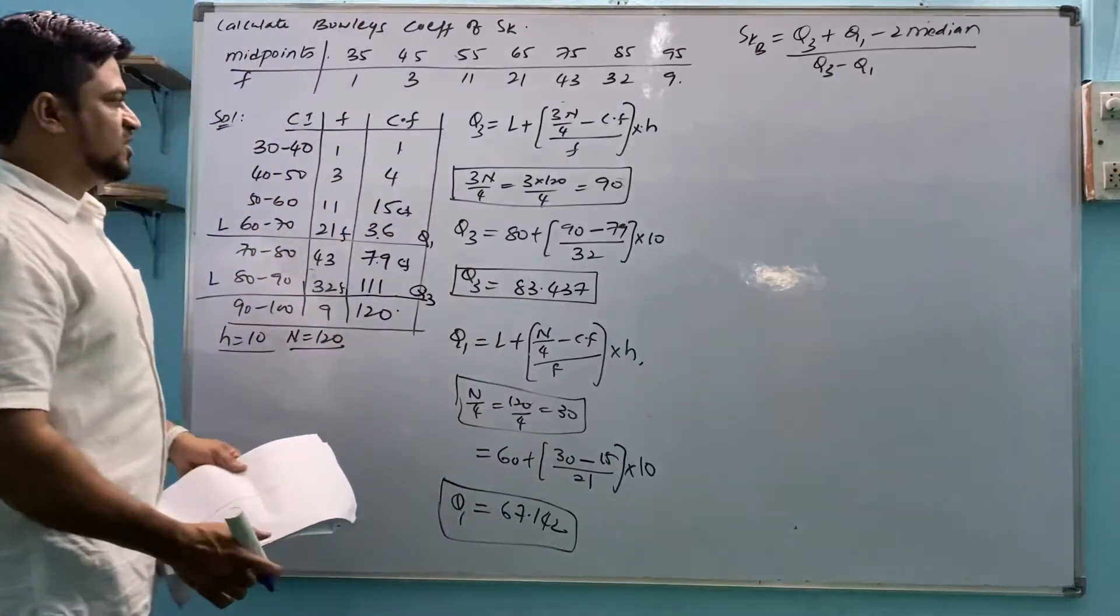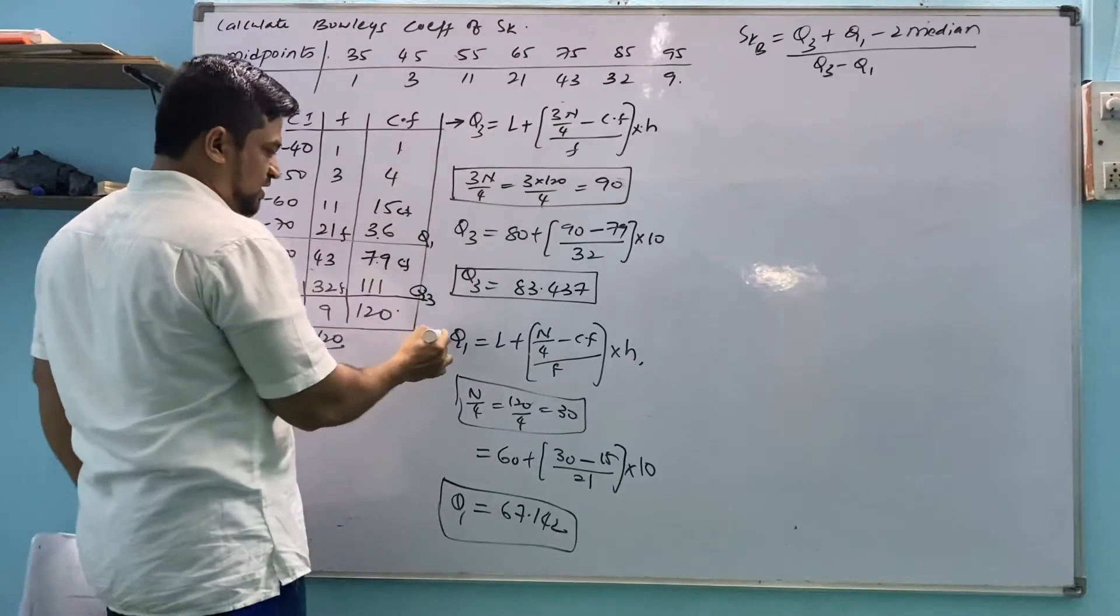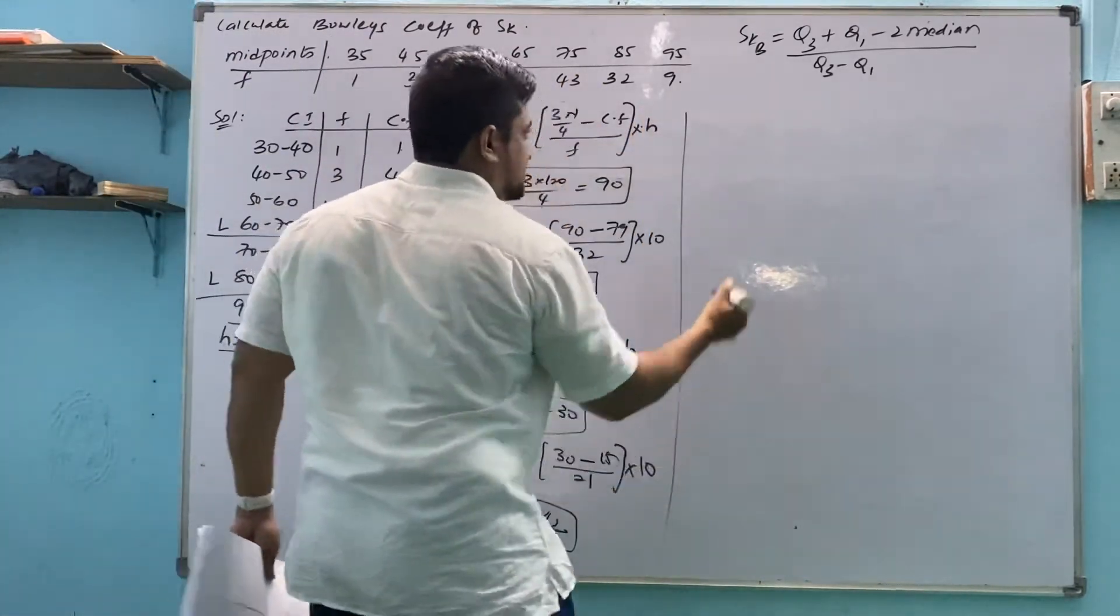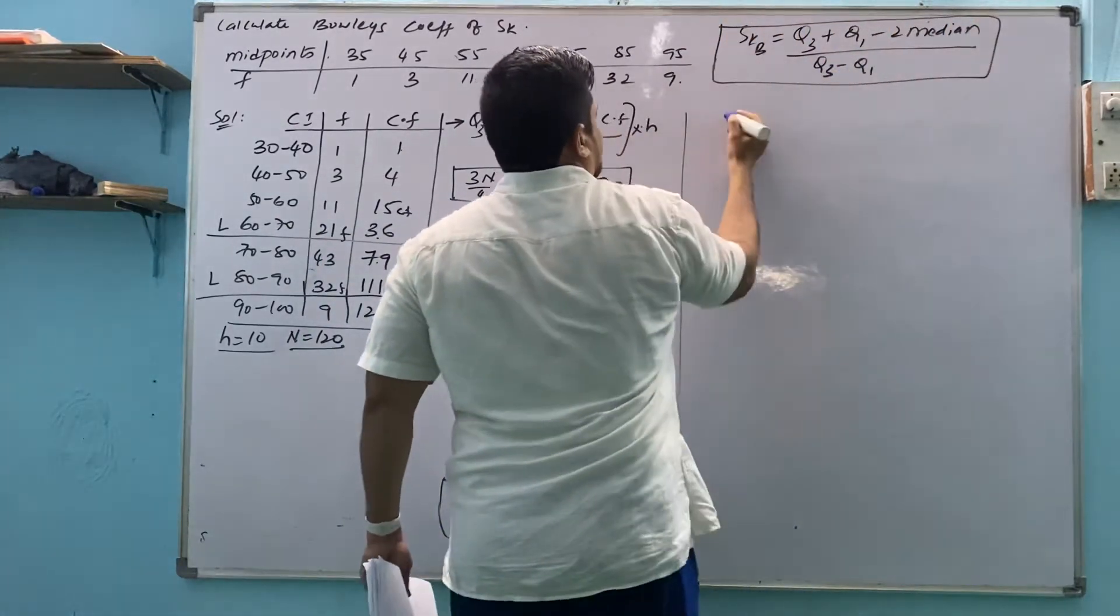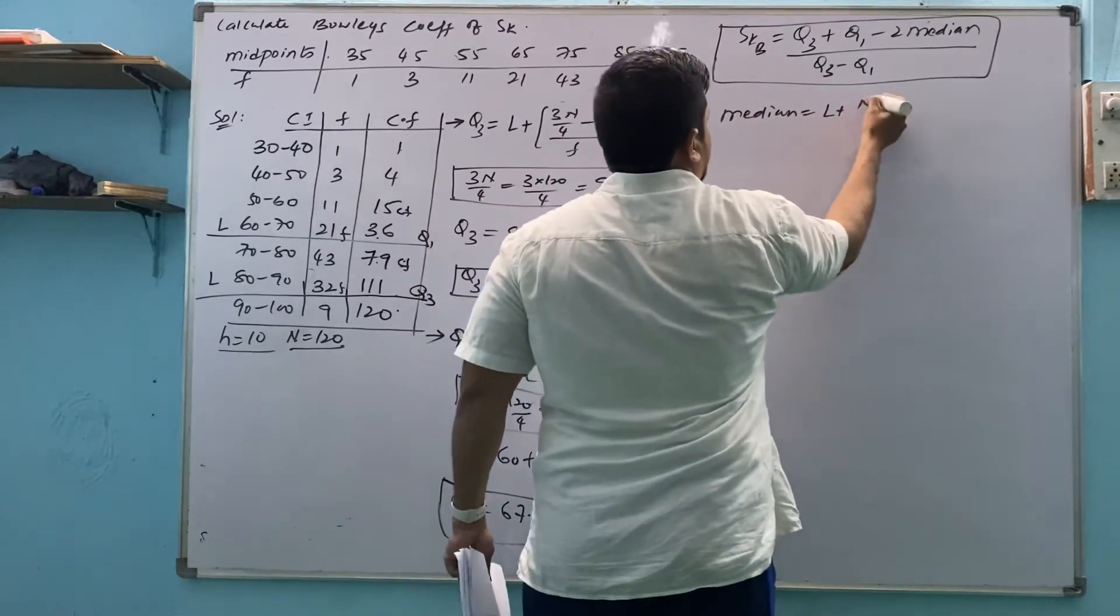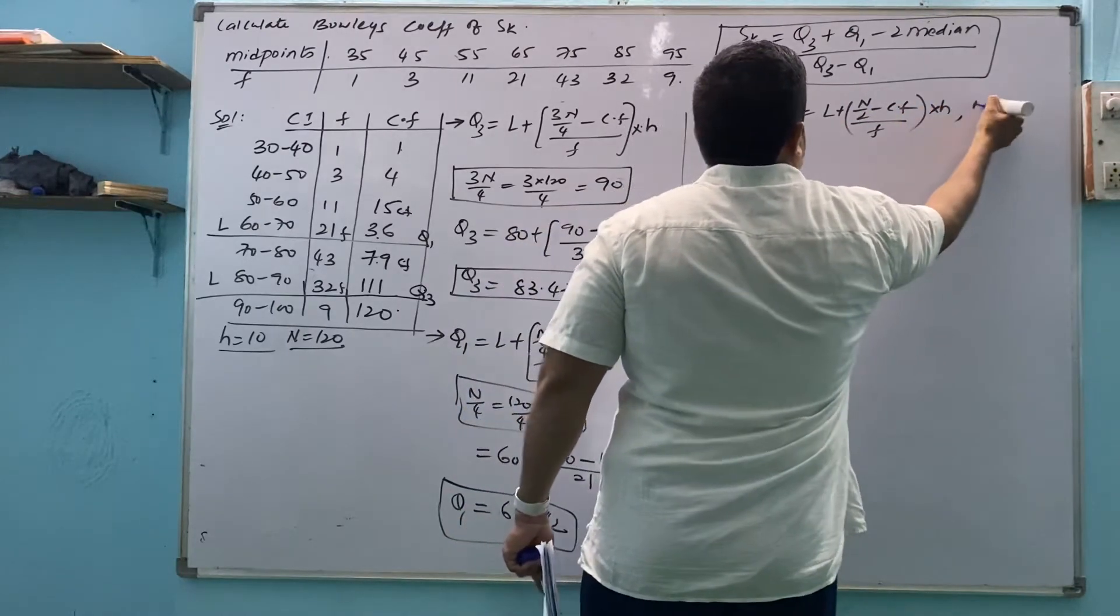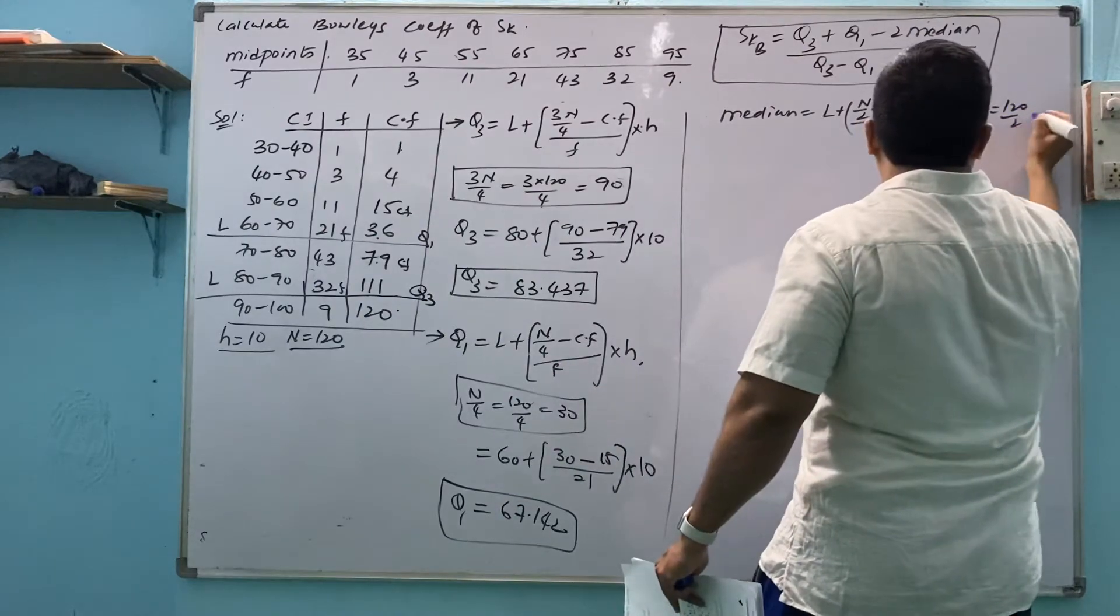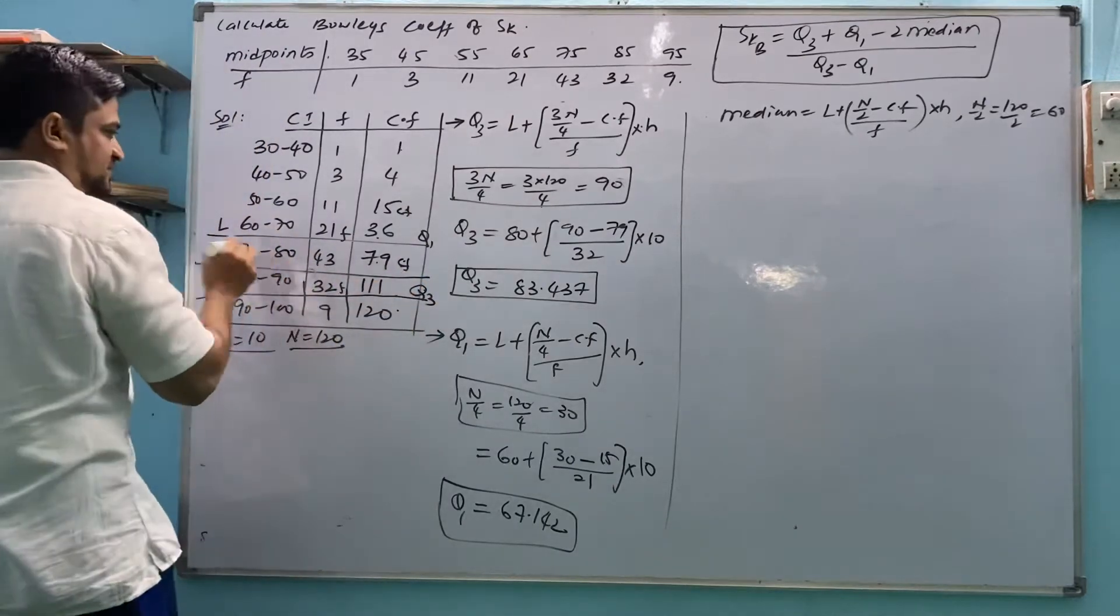Check how many things we got. We got Q3. Then we got Q1. Then median we have to find. Median now. Median equals to l plus n by 2 minus cf by small f into h. So we will find n by 2 here and decide this. 120 by 2. This is 60. Where we find 60? 60 lies here. This is median class.